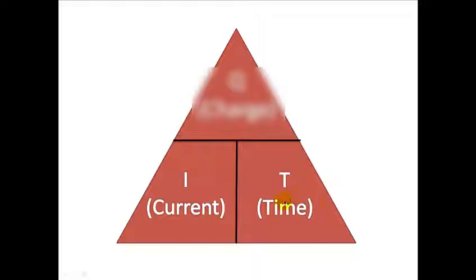So i times t, or current times time, would equal charge. Now, just to review, the important things you should think about when applying this method, is that you always cover up the variable you're trying to solve. And the other variables that are visible, those are the variables you use. Another thing you should think about is this line, if it applies to you, because it indicates the division. And always know that the top variable starts first. Otherwise, if it's one of these two variables, anyone would do, because you're going to multiply anyways.